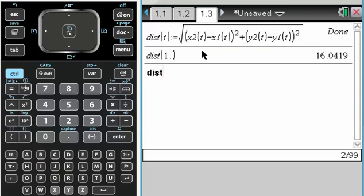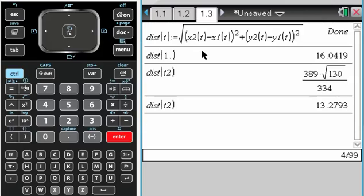If I do the distance of t2, that's a crazy radical. So that's actually how far apart they are when plane 2 goes through the intersection point. They're not very close to each other. Could have done the same thing for plane 1, but I don't feel like it.